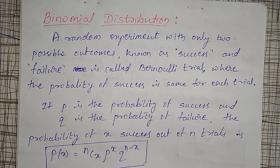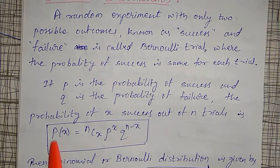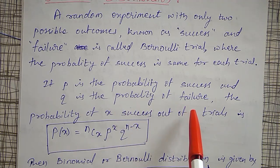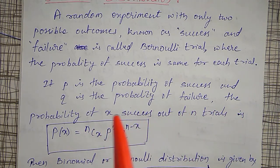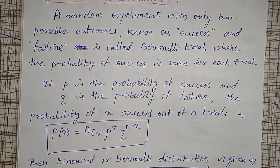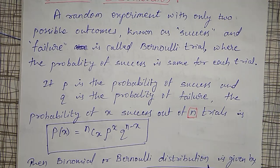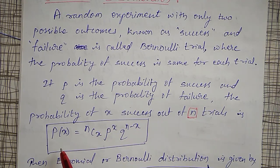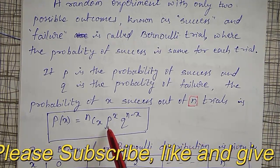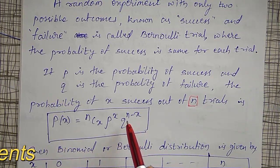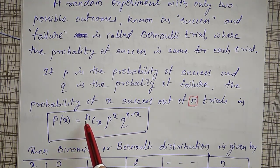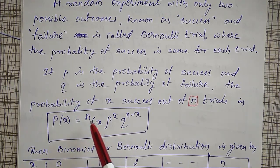Using Bernoulli trials, if small p represents the probability of success and small q represents the probability of failure, then the probability of x successes out of n trials is given by P(x) = nCx · p^x · q^(n−x), where nCx is the combination, p is probability of success, q is probability of failure, and n is the number of trials.